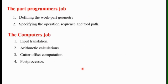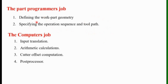We will see the Part Programmer's job and the Computer's job. The role of the Programmer in Computer Assisted Programming: first, the Programmer has to define the work part geometry. Then, he should specify the operation sequence and the toolpath — the operation sequence required to perform on that work part and the toolpath the tool should follow. These are the two roles of the Programmer.